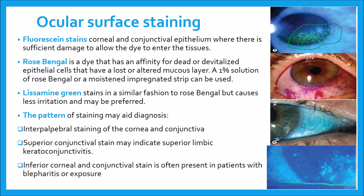Next is rose bengal. It is a dye that has an affinity for dead or devitalized epithelial cells that have a lost or altered mucous layer. Corneal filaments or plaques are also shown up more clearly by the dye, and the use of a red-free filter may help visualization. A 1% solution of rose bengal or a moistened impregnated strip can be used. The dye may cause intense stinging that can last for up to a day, particularly in patients with severe keratoconjunctivitis sicca. To minimize irritation, a very small drop should be used, immediately preceded by a drop of topical anesthesia, and excess washed out with saline. This picture shows staining with rose bengal, and you can see the staining in the conjunctival area, indicating conjunctival damage.